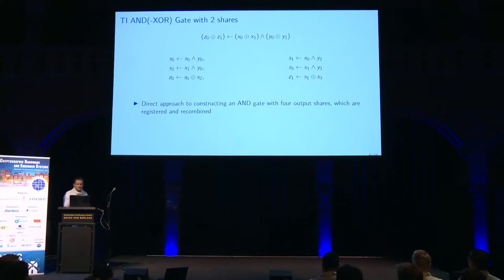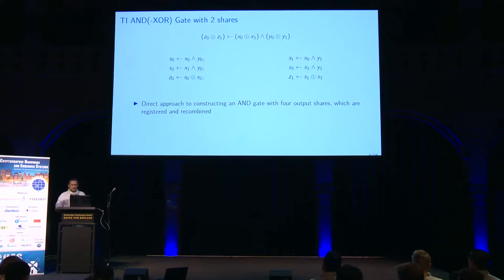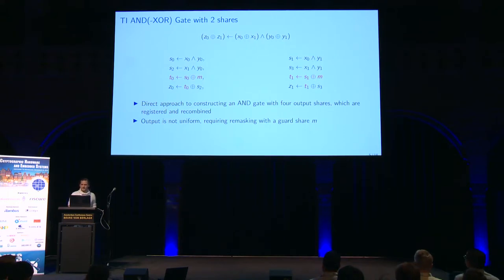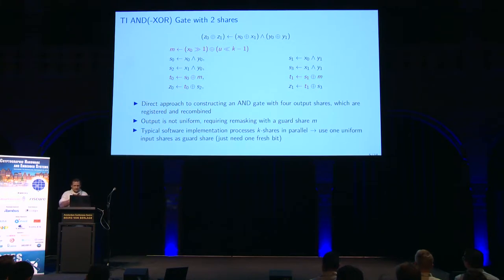I'll first introduce an AND-XOR gate. The goal is to split the operation into multiple shares — in this case two shares. A straightforward approach to implement a secure AND gate has a problem: one of the properties of threshold implementations, namely uniformity, is violated. To gain uniformity, we need to introduce a guard share M. We developed a method to reuse one of the inputs as a guard share.